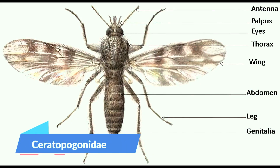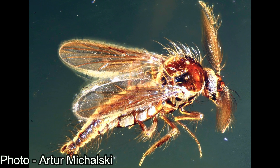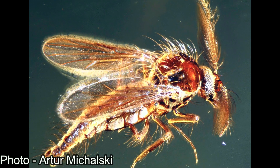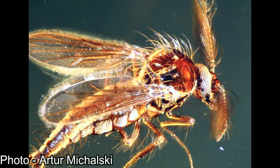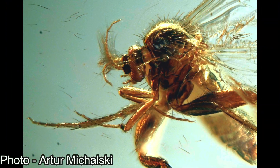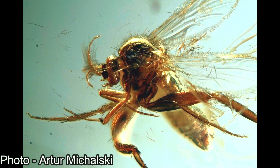First is Ceratopogonidae, the biting midge. In my eye, it looks extremely similar to a mosquito — fluffy wings with antennae, the same eyes, similar segmented abdomen. The main differences are shorter legs and lack of a long proboscis. So yep, not a mosquito.